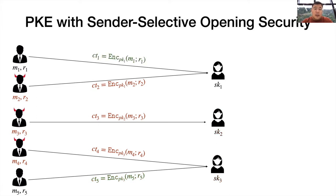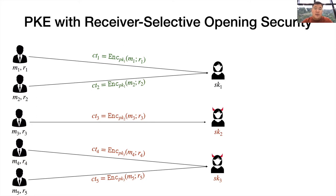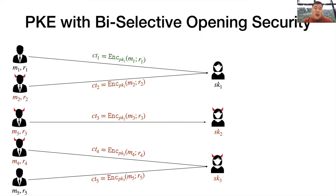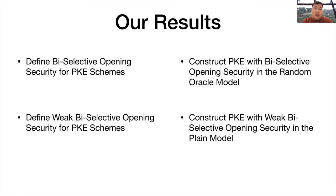So in the literature, we have formally studied sender-selective opening security, where only senders can be corrupted, and receiver-selective opening security, where only receivers can be corrupted. However, we have not formally defined or constructed PKE schemes with biased-selective opening security, where both the senders and receivers may be corrupted. So in this work, we formally study biased-selective opening security for PKE schemes.